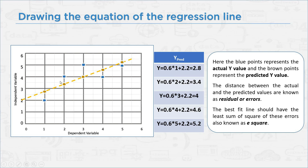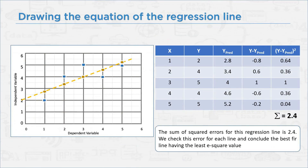We apply the m and c values for each data point to get our y prediction value using y equals m times x plus c. After calculating the y prediction value, the distance between the actual and the predicted value is known as residual error. The best fit line should have the least sum of squares of these errors, also known as the squared error. The sum of squared errors of this regression line is 2.4. We check the error for each line and conclude that the best fit line is the one having the least squared error.